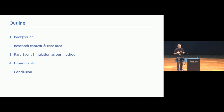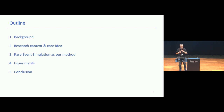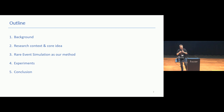I will start with a bit of background on what is a backdoor and how it works on classifiers. Given that background, I will go on to talk about the research context, the core idea, and introduce the core of our paper, which is using rare event simulation to defend against those backdoors. I will then go over experiments and finally conclude.